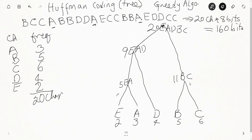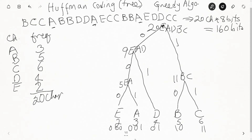The left side of the root is represented as zero and the right as one. So to represent C, you start from the root and go one, one — only two bits. B is one, zero. D is zero, one. A is zero, zero, one. And E is zero, zero, zero — you go left three times.